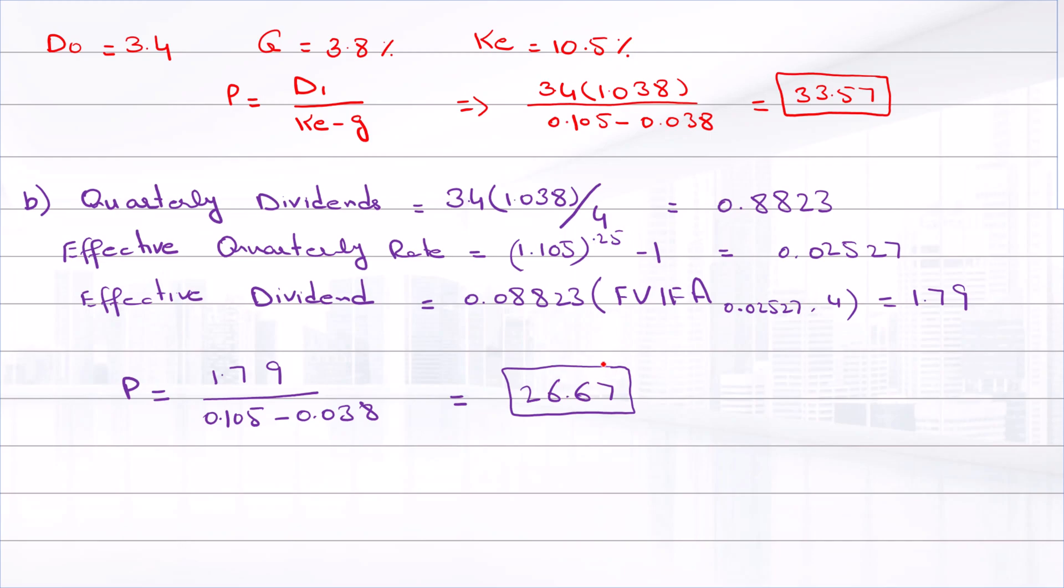If the company pays quarterly dividends, the price will be $26.67, and if dividends are annual, the price will be $33.57. Note that we cannot simply find the quarterly effective required return and growth rate to find the value of the stock. This would assume the dividends increase each quarter, not each year.